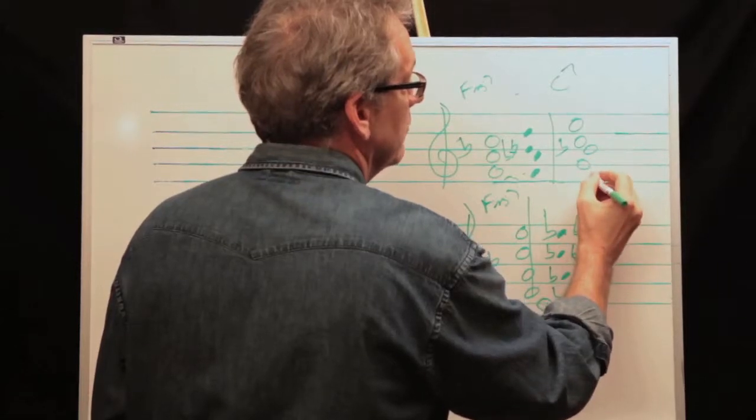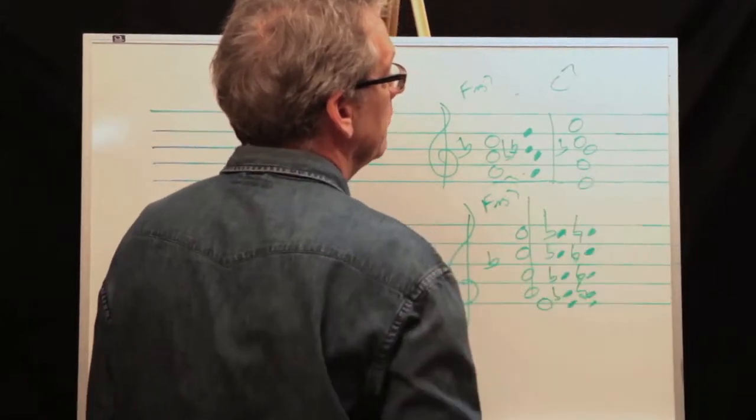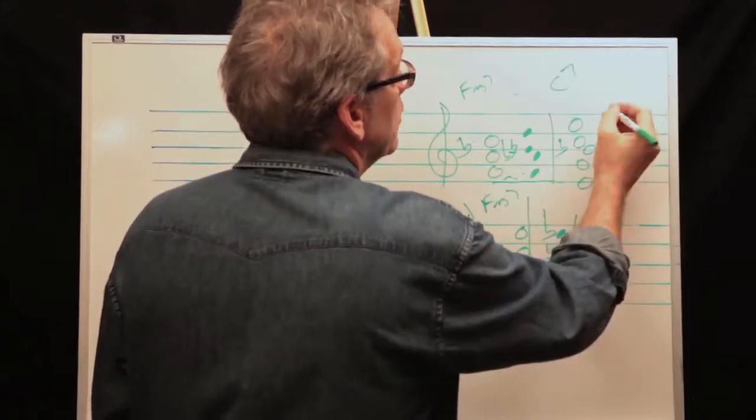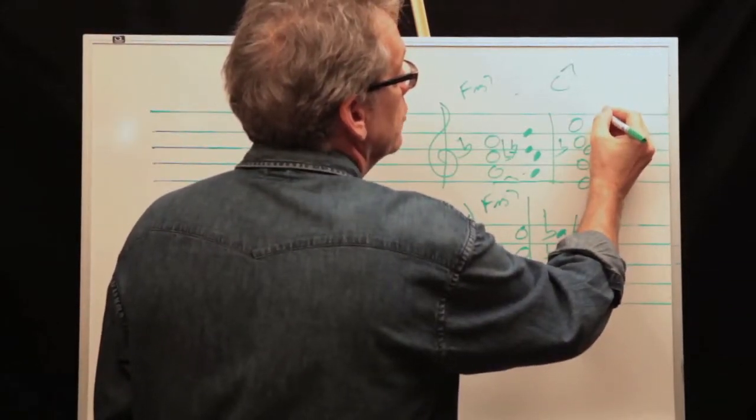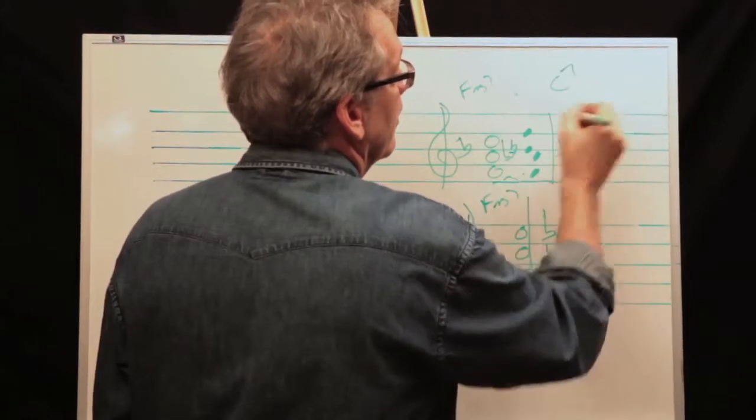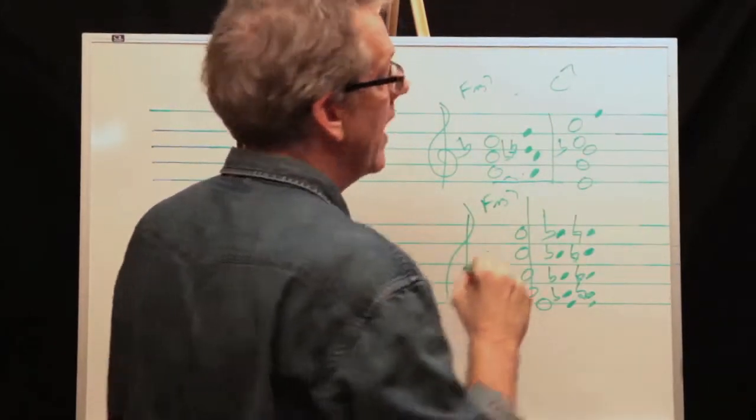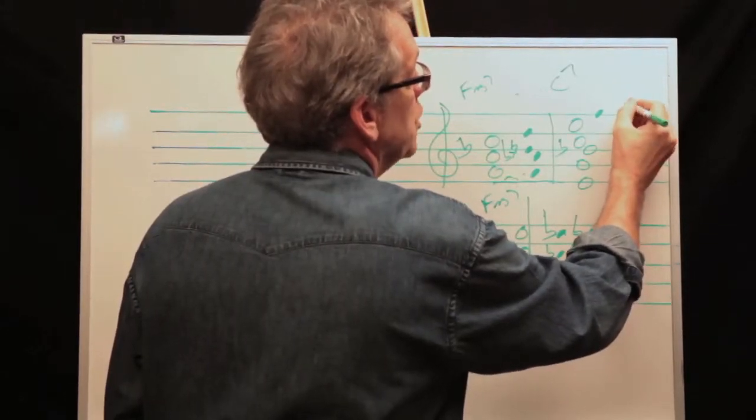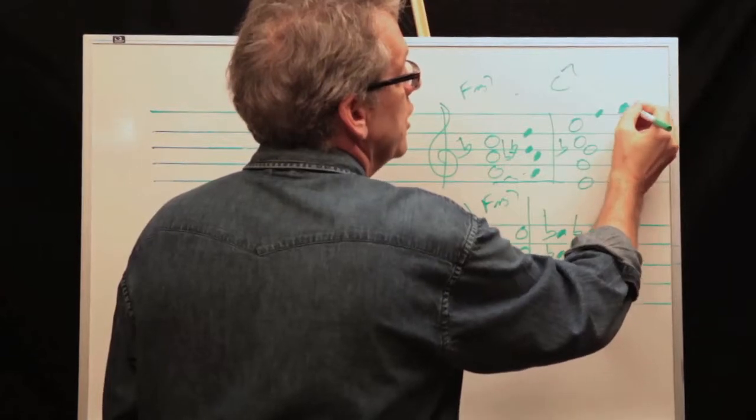And that would be B-flat, G and E again. Let's say that we're going to go up to the E to F. F is a half step, right? And then let's say we're going to go up to G.